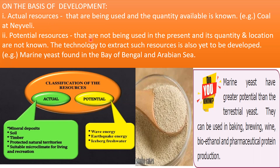Potential resources are resources not being used in the present because their quantity and location are not known to us, and the technology to extract such resources is yet to be developed. An example is marine yeast. We have both terrestrial yeast and marine yeast. The terrestrial yeast is used by us for cooking, baking, brewing, wine, and bioethanol. The marine yeast is of better quality than the terrestrial yeast, and we know that it is available in the Bay of Bengal, but we have not yet found any technology to extract it. This is an example of a potential resource.